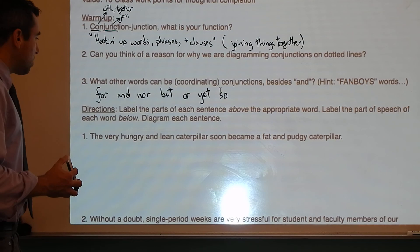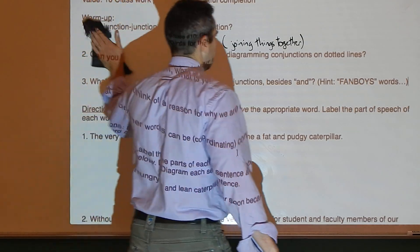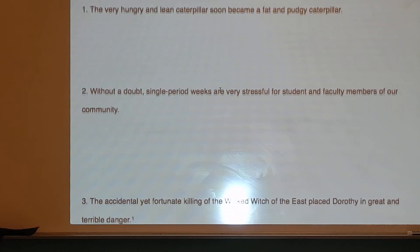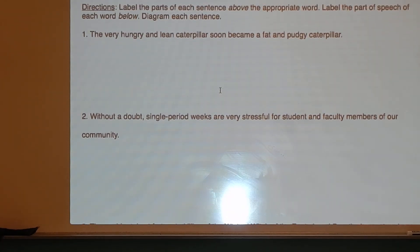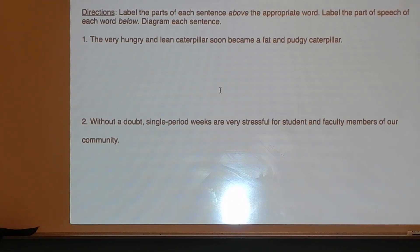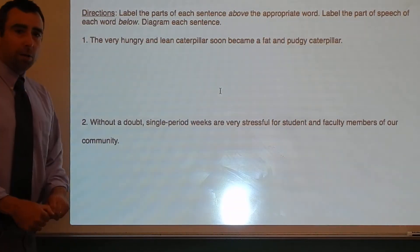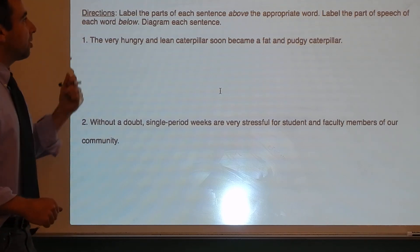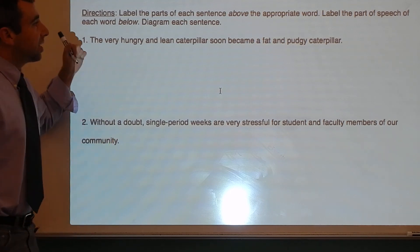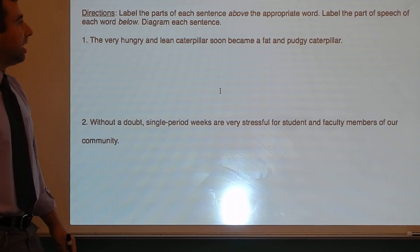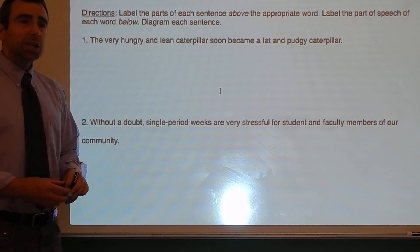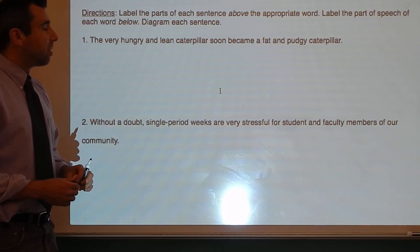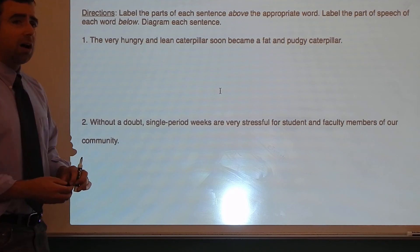Alright, let me erase and scroll down and we'll move on to the practice sentences. Remember: we label the parts of each sentence above the appropriate word first, then label the part of speech of each word below, then diagram each sentence. Sentence one: 'The very hungry and lean caterpillar soon became a fat and pudgy caterpillar.' Shout out to Eric Carle and his book The Very Hungry Caterpillar — there's an Eric Carle museum of all his art somewhere in Massachusetts.